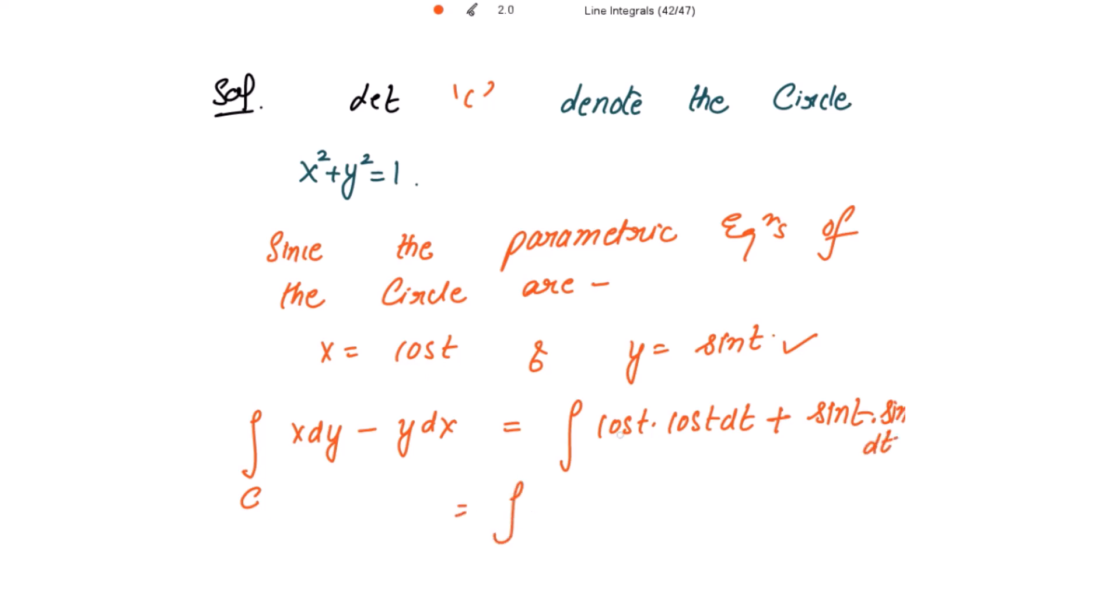So this is equal to, because we have used the parametric equations for the circle, the limits of t become from 0 to 2π.